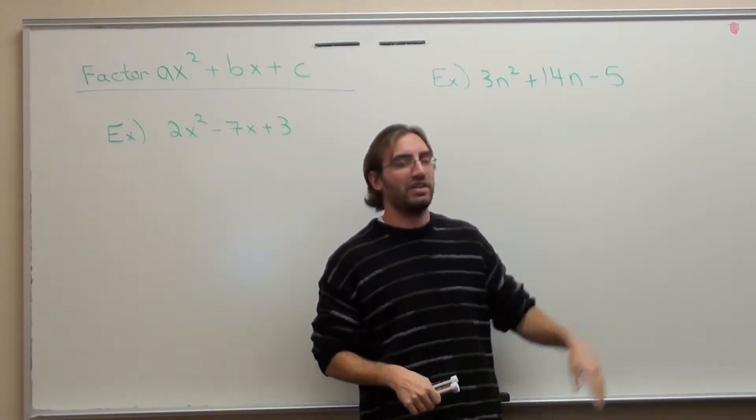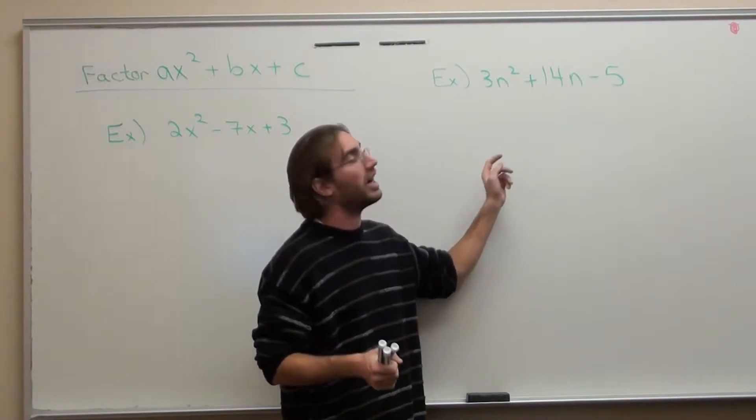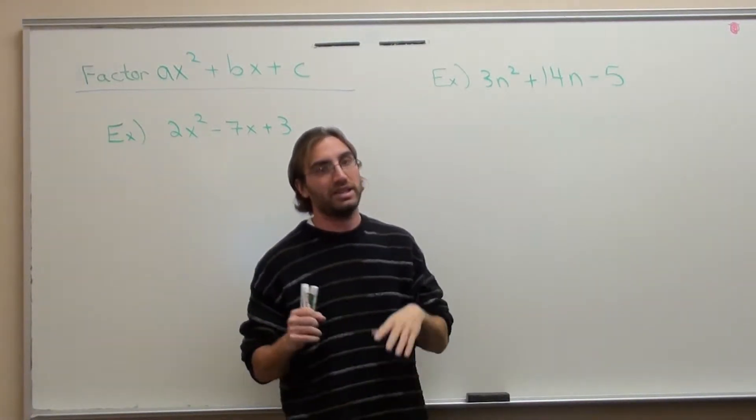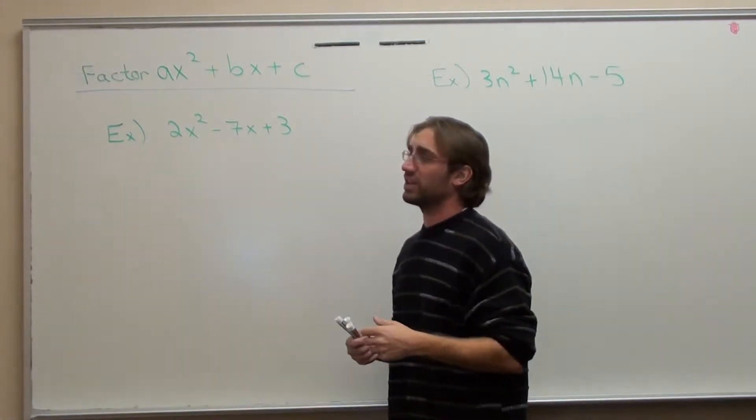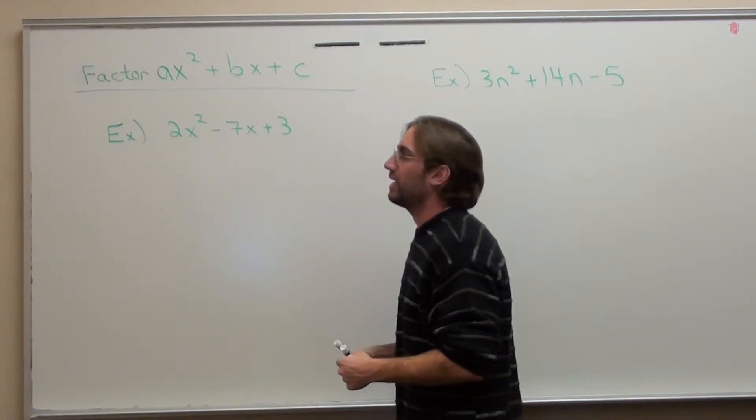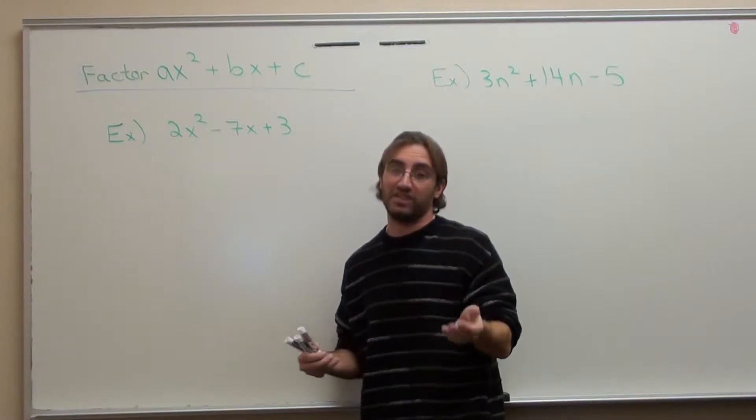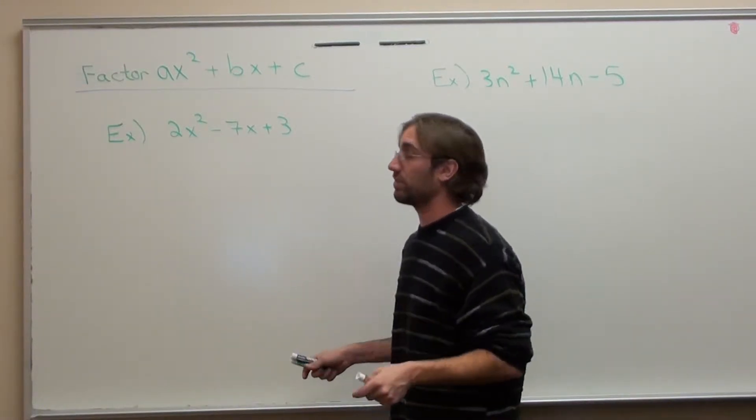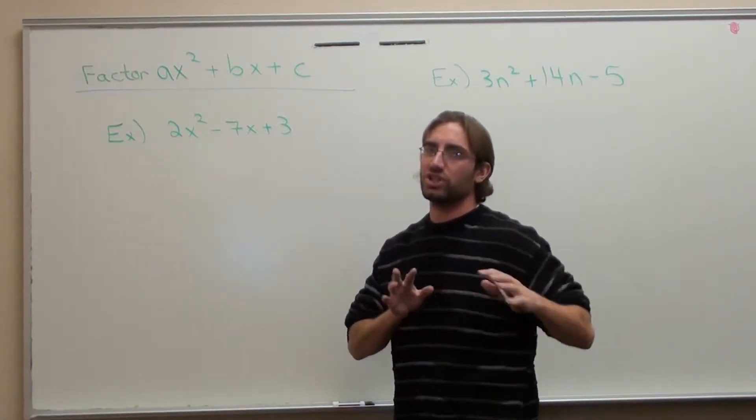There's nothing that goes into 2, -7, and 3. Nothing that goes into x squared, x, and no x. So there's no GCF. Same thing here. 3, 14, and 5. There's no factor in any of them. And n squared, n, and no n. Good. At least I don't have to do that right now. But what I have to do is figure this out by a method called grouping.